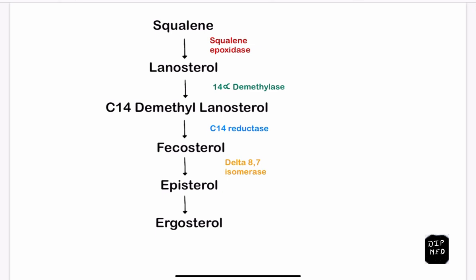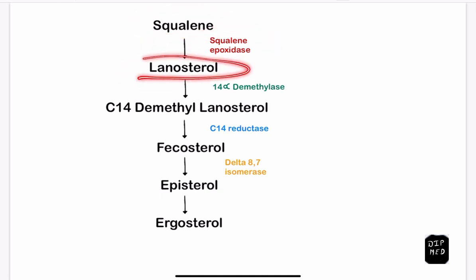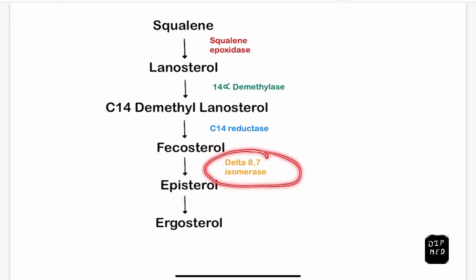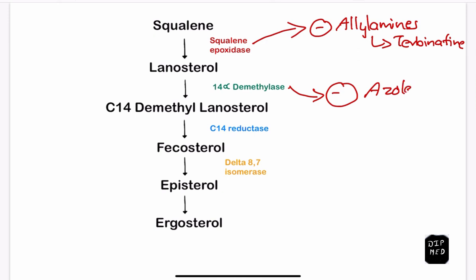In the fungal cell membrane, squalene is converted to lanosterol by the enzyme squalene epoxidase. Lanosterol is then converted to C-14 demethyl lanosterol by the enzyme 14-alpha demethylase. This is converted to fecosterol by C-14 reductase, then to episterol by delta-8,7-isomerase, and finally episterol is converted to ergosterol, which forms the cell membrane. The enzyme squalene epoxidase is inhibited by allylamines, which include terbinafine.